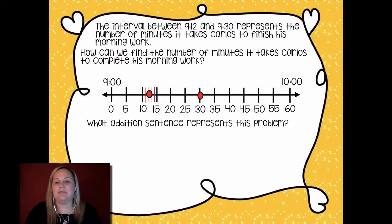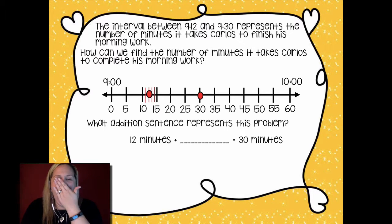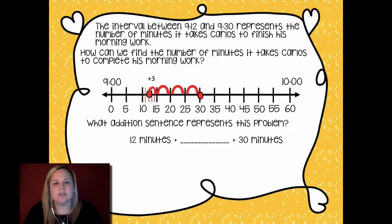What addition sentence can represent this problem? This can be a little bit tricky as we're thinking, but first you want to start with where he's at. He's at 12 minutes, right? He's at that 12-minute mark in 9:12. Then we don't know how many minutes it takes to get to this 30, but we know that that's where we're ending, at that 30 minutes. Now we're actually going to kind of make those jumps. I want to get to that nice friendly number of 15. Then I'm going to jump again and again and again. Oh look, I landed on 30. So now let's go back in and label these.